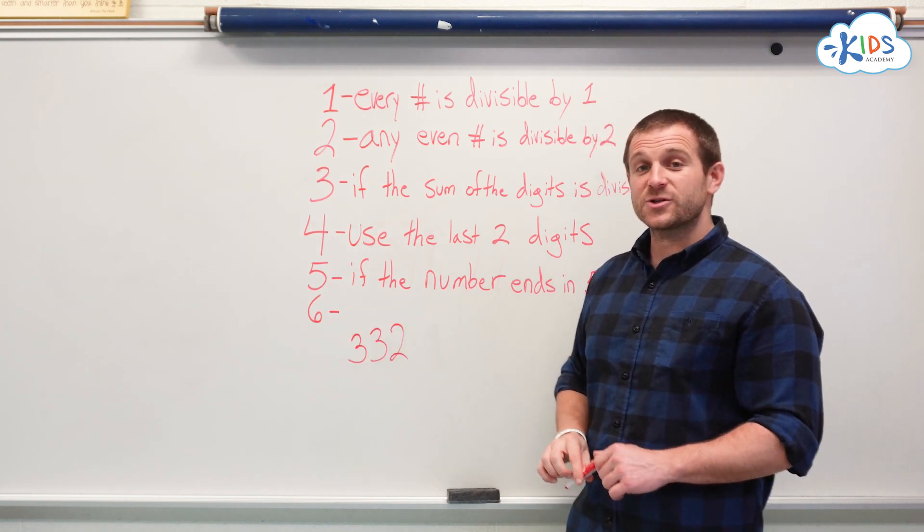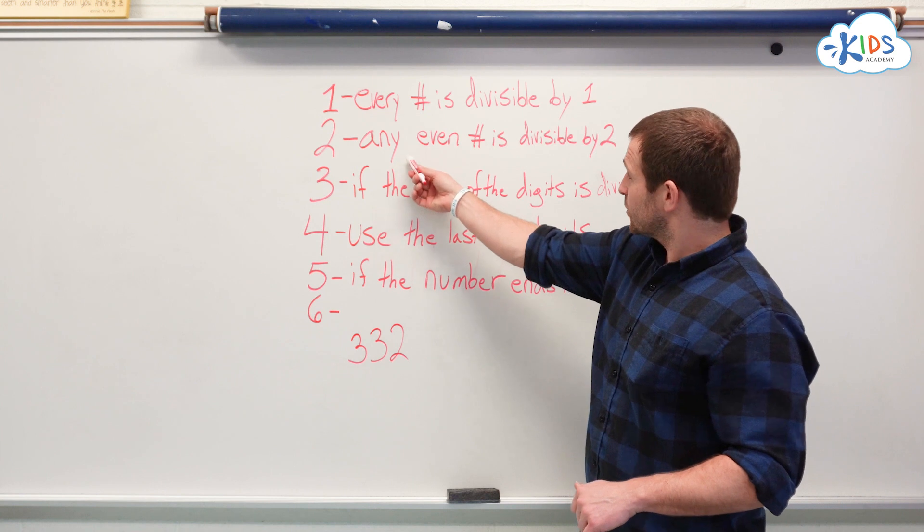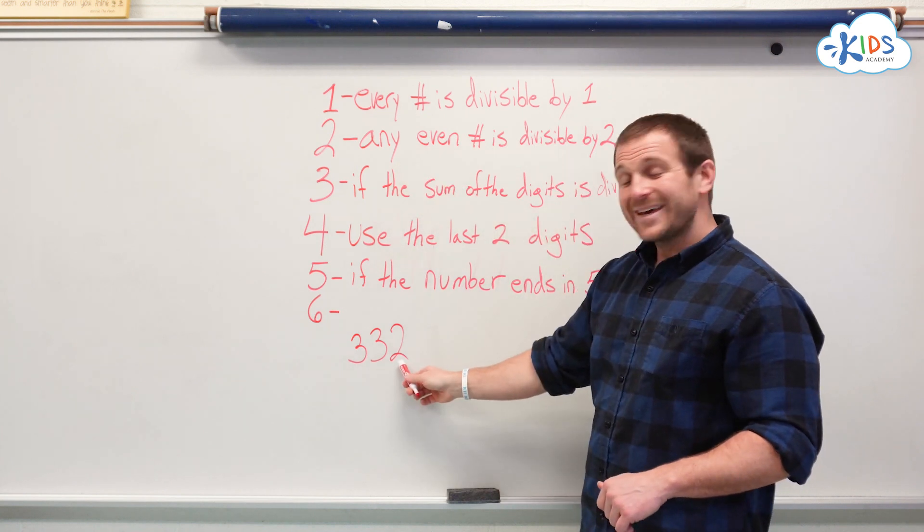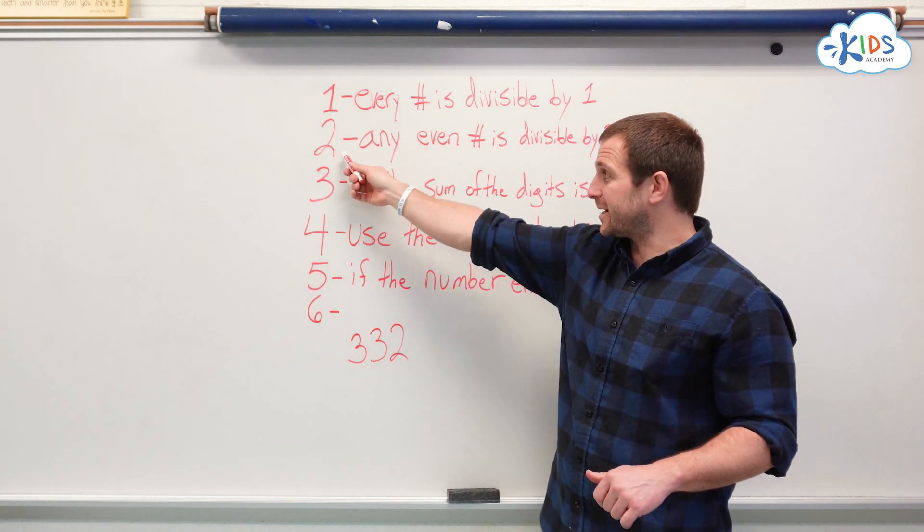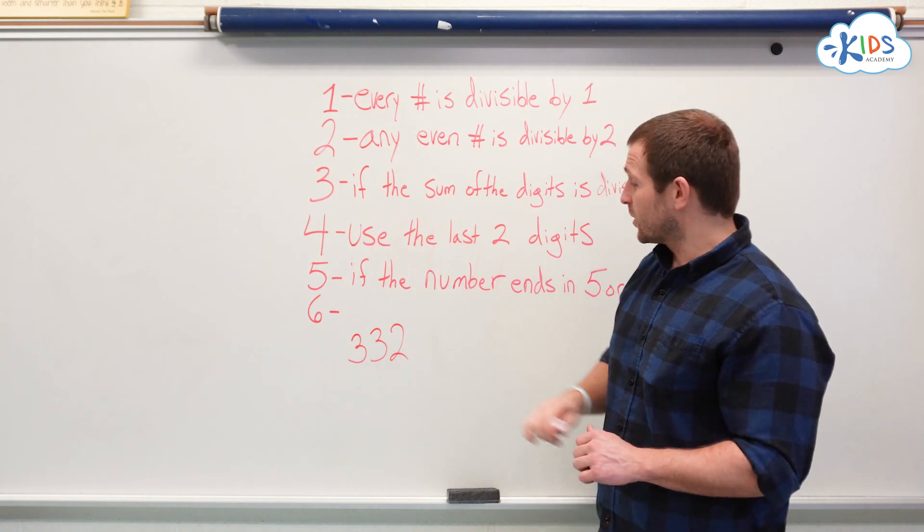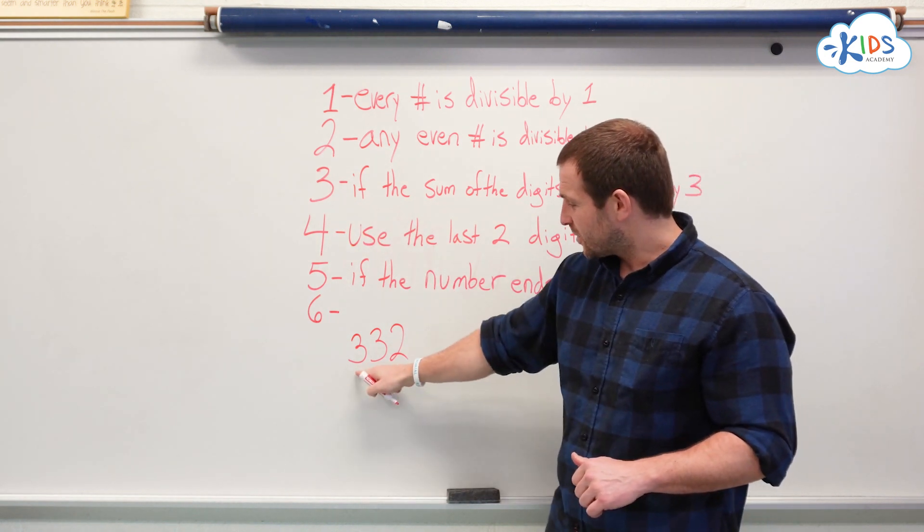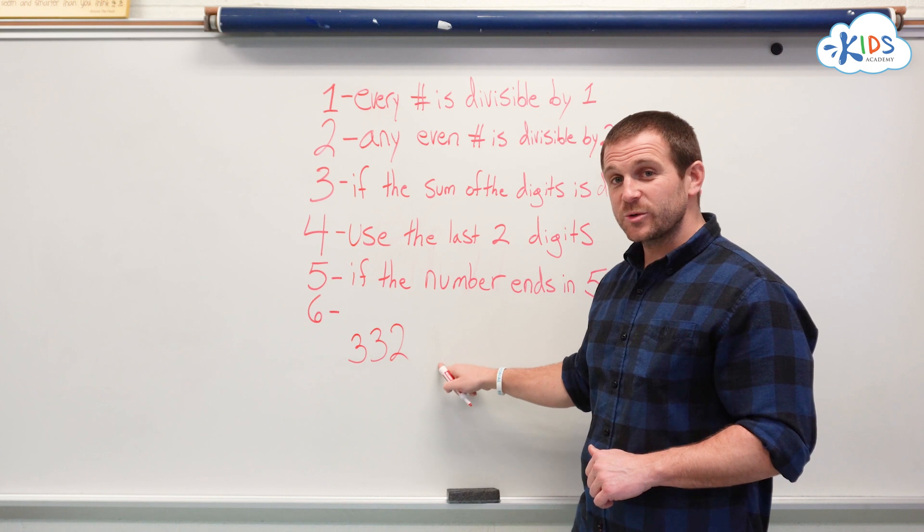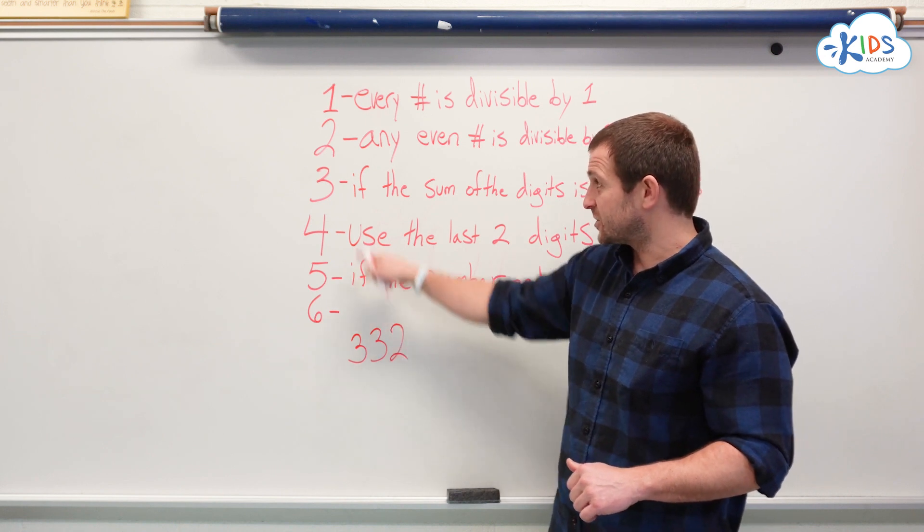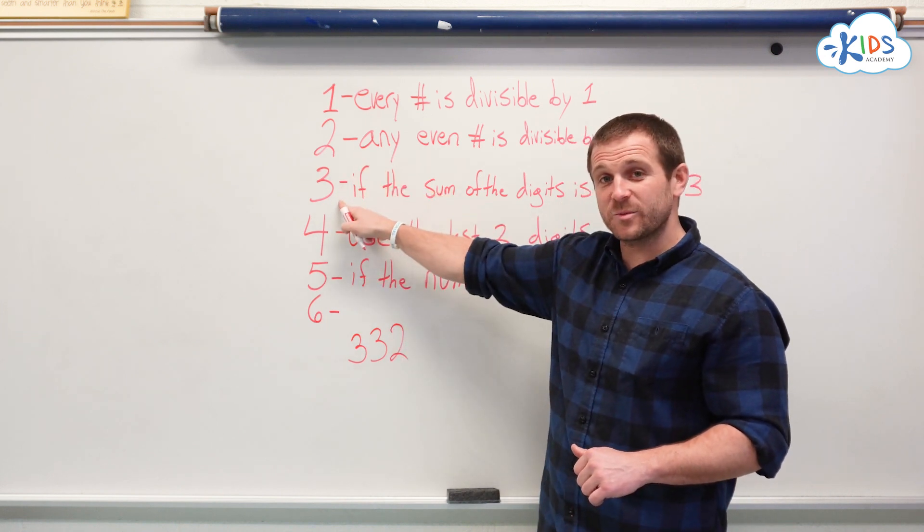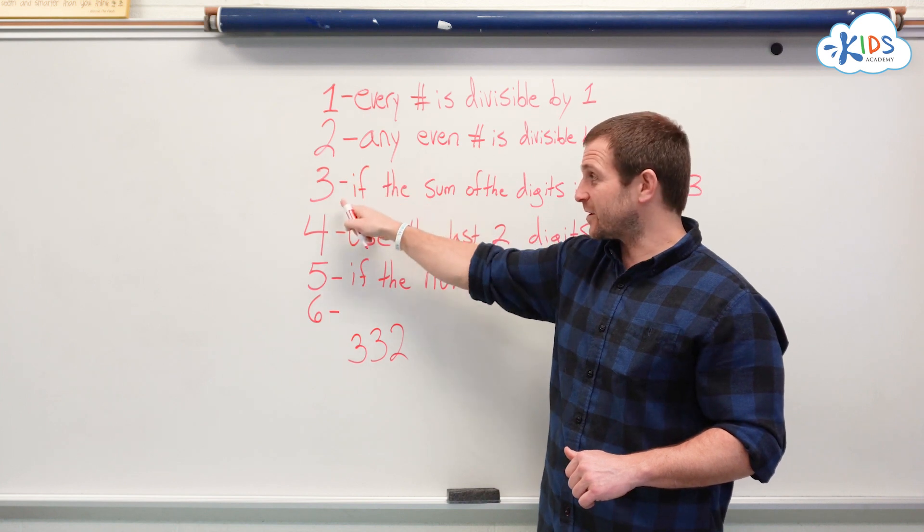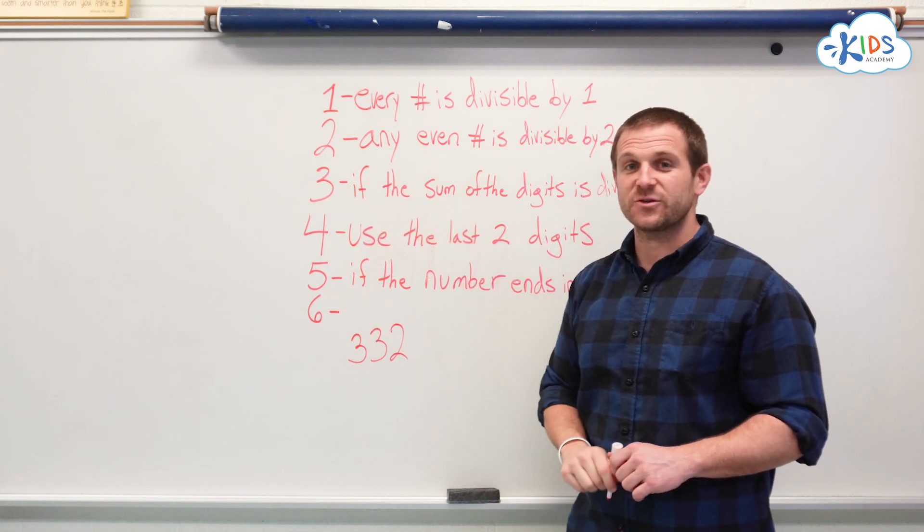Let's take the number 332. First we check to see if it's even. It is even, so it is divisible by 2. Now we're going to check our 3 rule, which is adding up all the digits. 3 plus 3 is 6, plus 2 is 8. 332 is divisible by 2 and divisible by 3. Since it follows both of those rules, it's also divisible by 6.